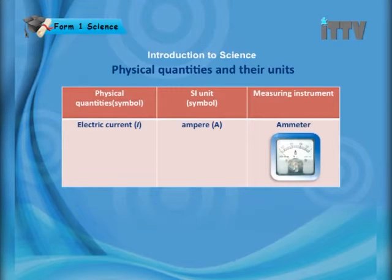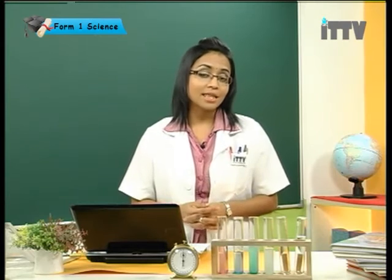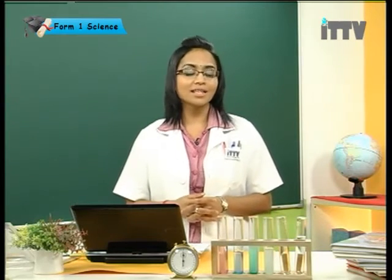The last physical quantity is electric current. The SI unit for electric current is ampere, written with a large A. The tool used to measure electric current is an ammeter. To recap: Kelvin for temperature, kilogram for mass, meter for length, and ampere for electric current — these are the SI units.